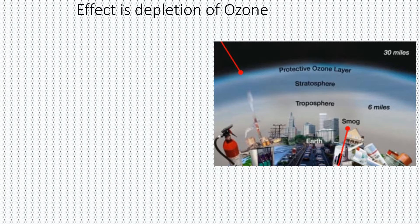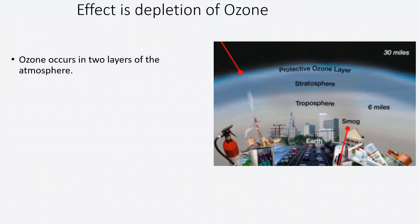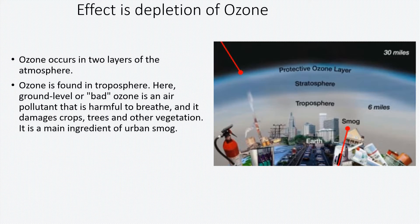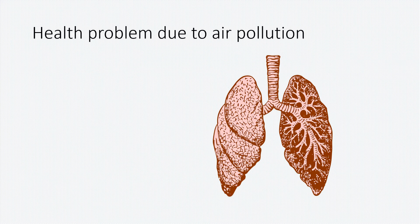The effects of air pollution include depletion of the ozone layer. The good ozone in the stratosphere is getting depleted, while bad ozone — which is actually smog — is forming at ground level because of these pollutants.